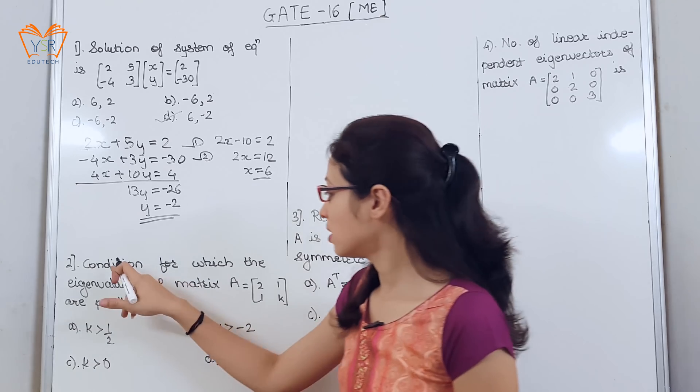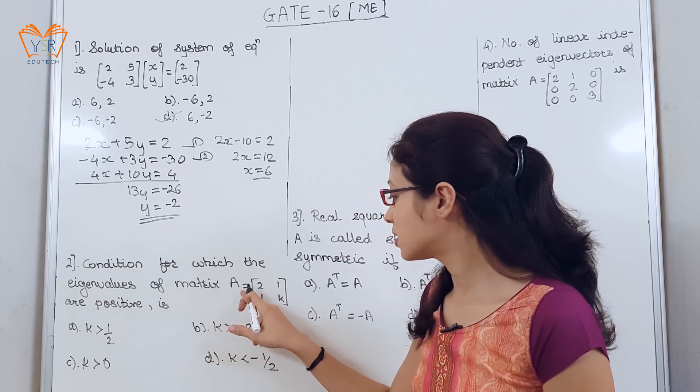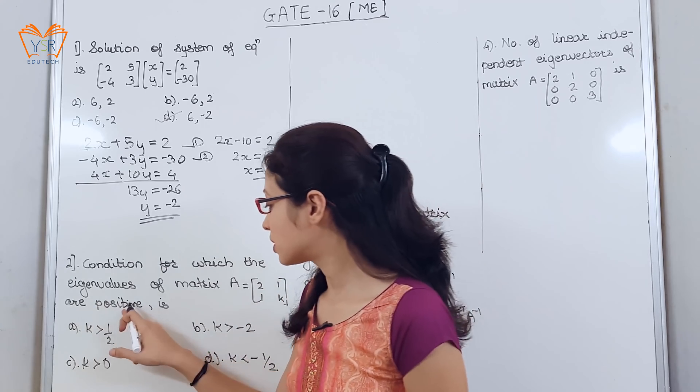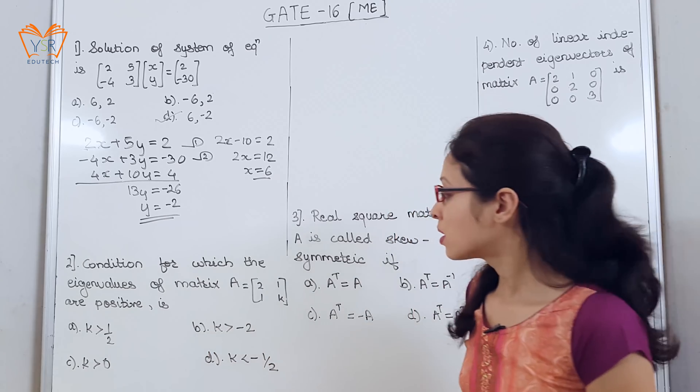The next example: condition for which the eigenvalues of matrix A equal to 2, 1, 1, k are positive, and they have given the condition for k.